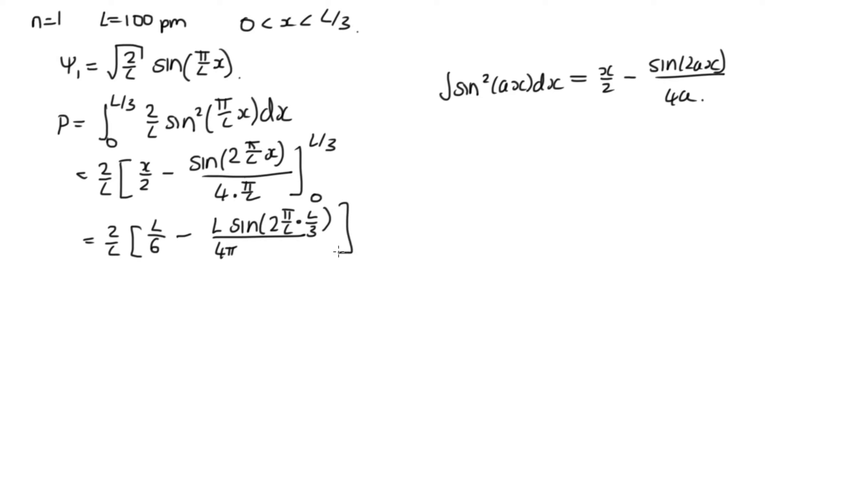So these L's cancel out here, and this L actually cancels this L and this L. So all our L's actually cancel out. So we've got 2 times 1 sixth minus sine of 2 thirds pi over 4 pi.